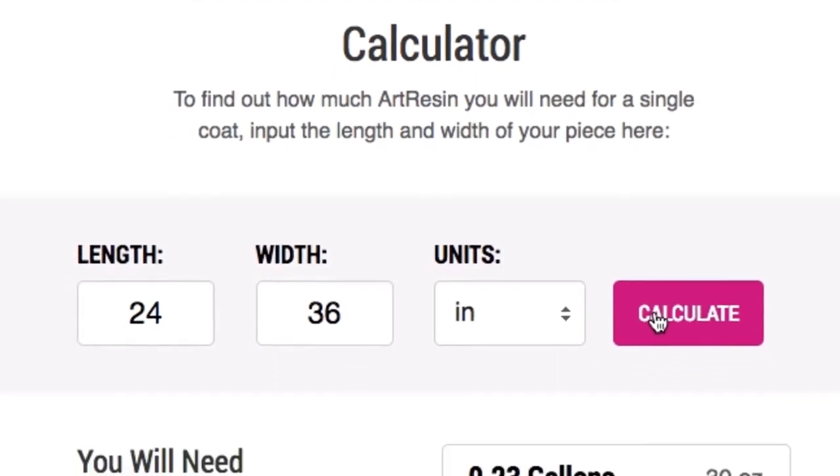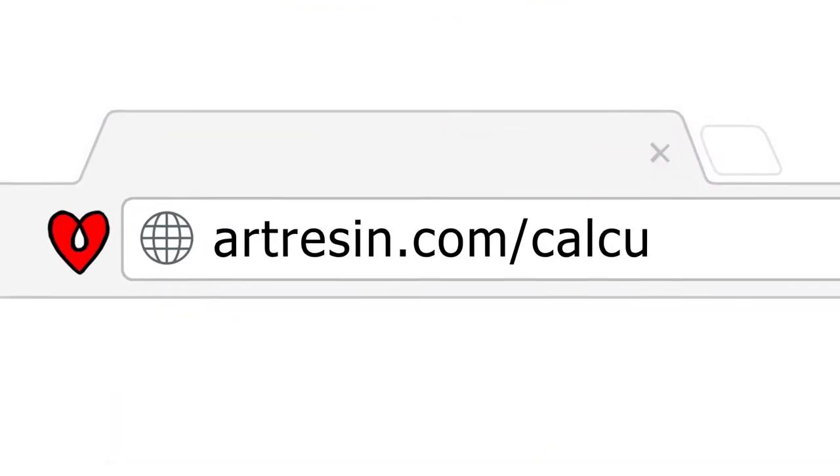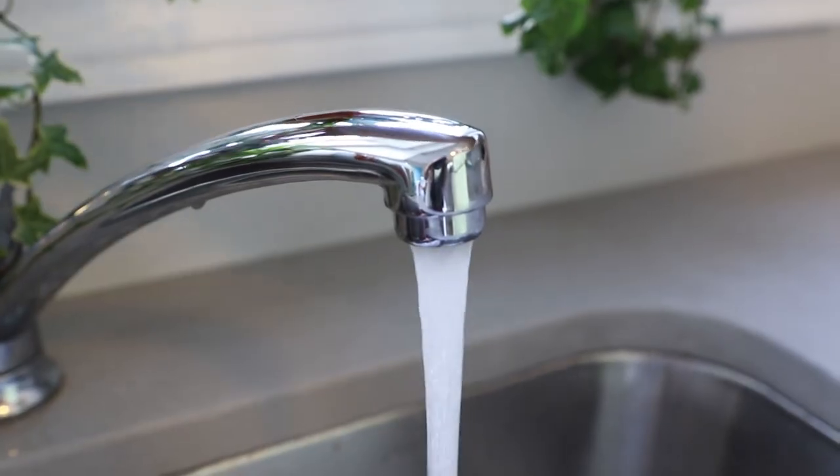Use our resin coverage calculator at artresin.com/calculator. It's a good idea to warm the resin and hardener up in a water bath before measuring it out to reduce bubbles. Just make sure not to get any water in it as it will turn the mixture cloudy.